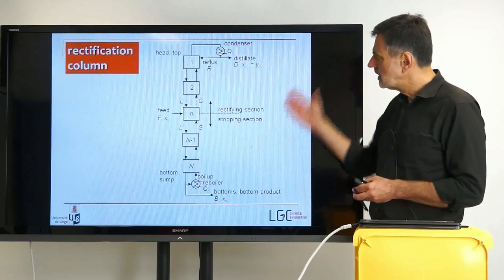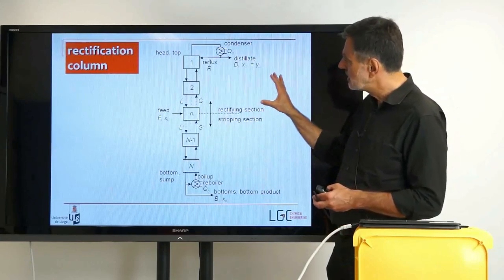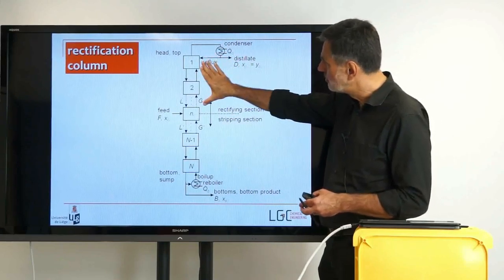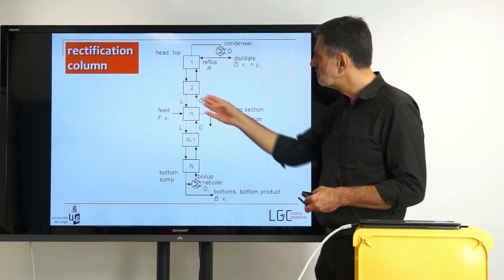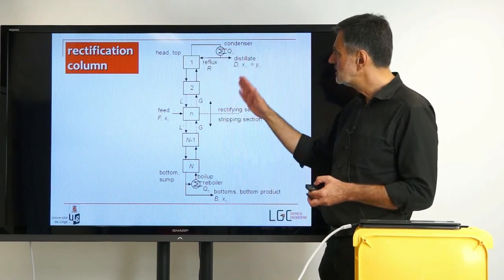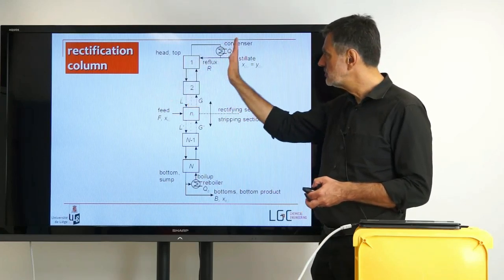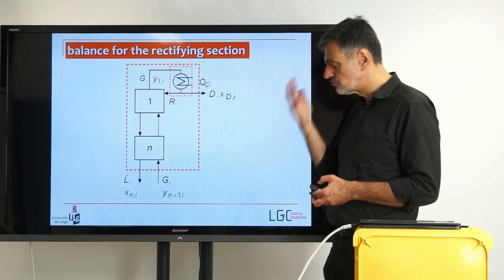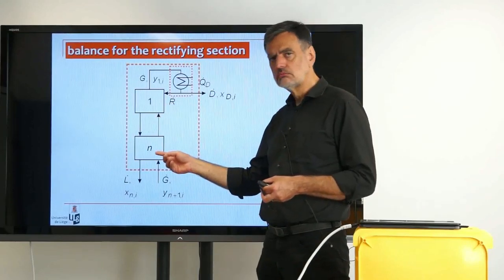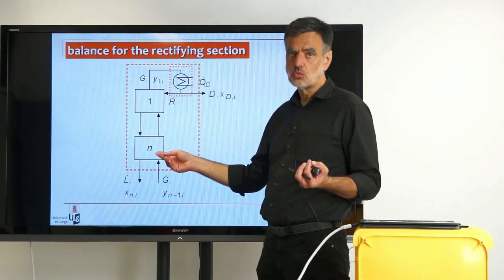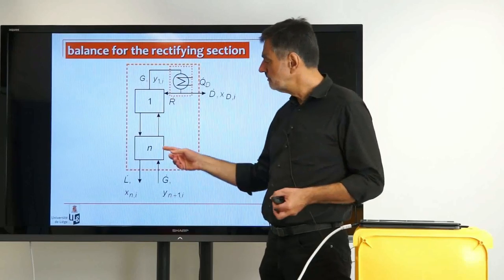Let's have a look again at the overall distillation column. The rectifying section we want to focus on is this top part. We are cutting out this top part and want to set up a balance for somewhere between the theoretical stages and the distillate. Our control volume covers an arbitrary number of stages, 1 to n; n can be as little as 1 or even 0.